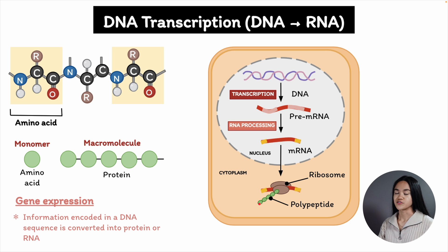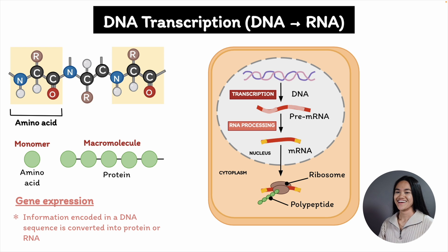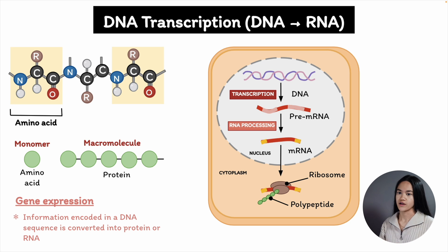The ribosome and mRNA molecule shown here look like a hot dog in a bun — this should help you remember it. So the first step is to copy the nucleotide sequence on a gene into RNA.